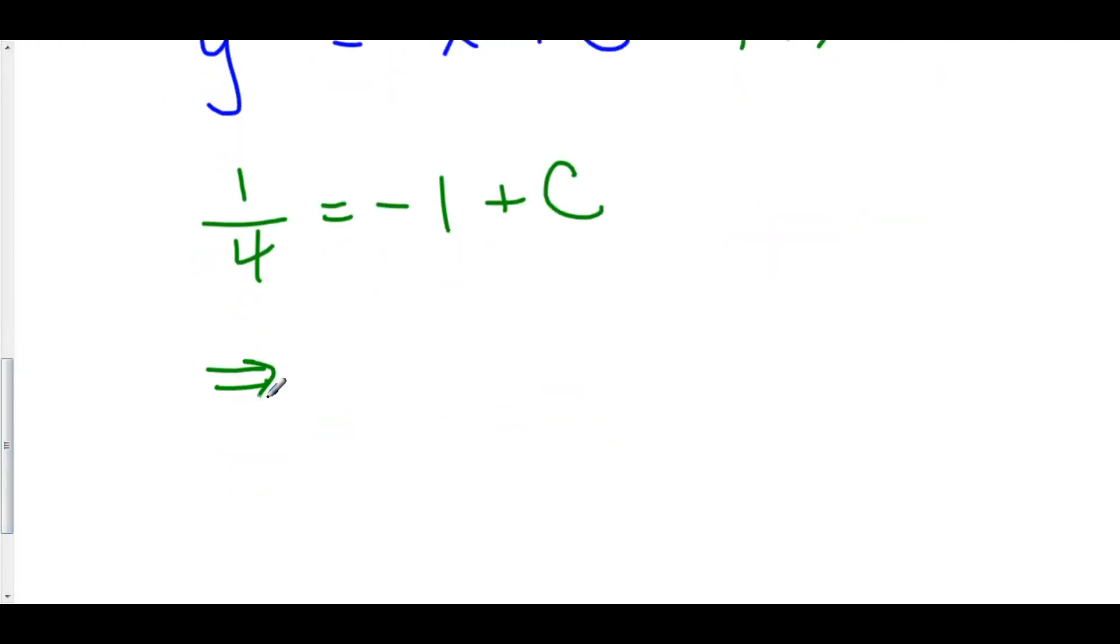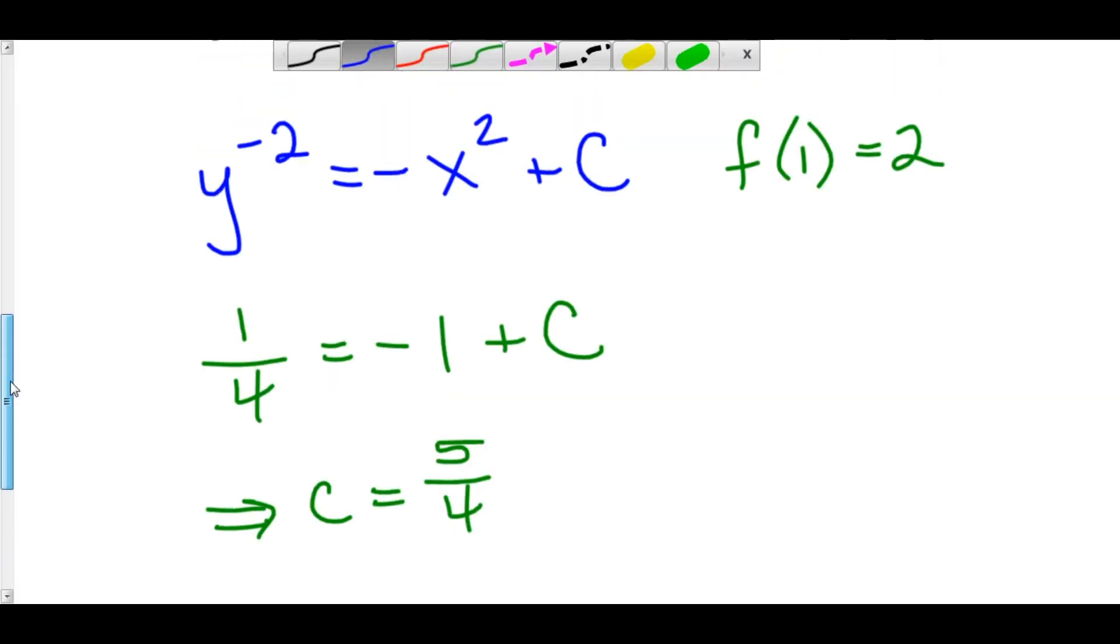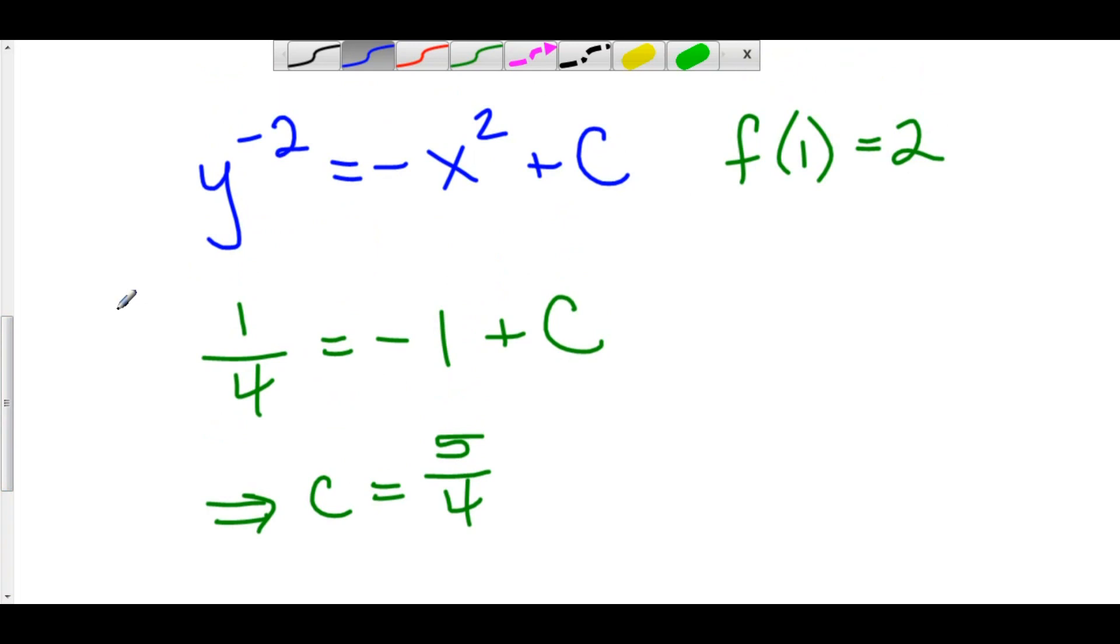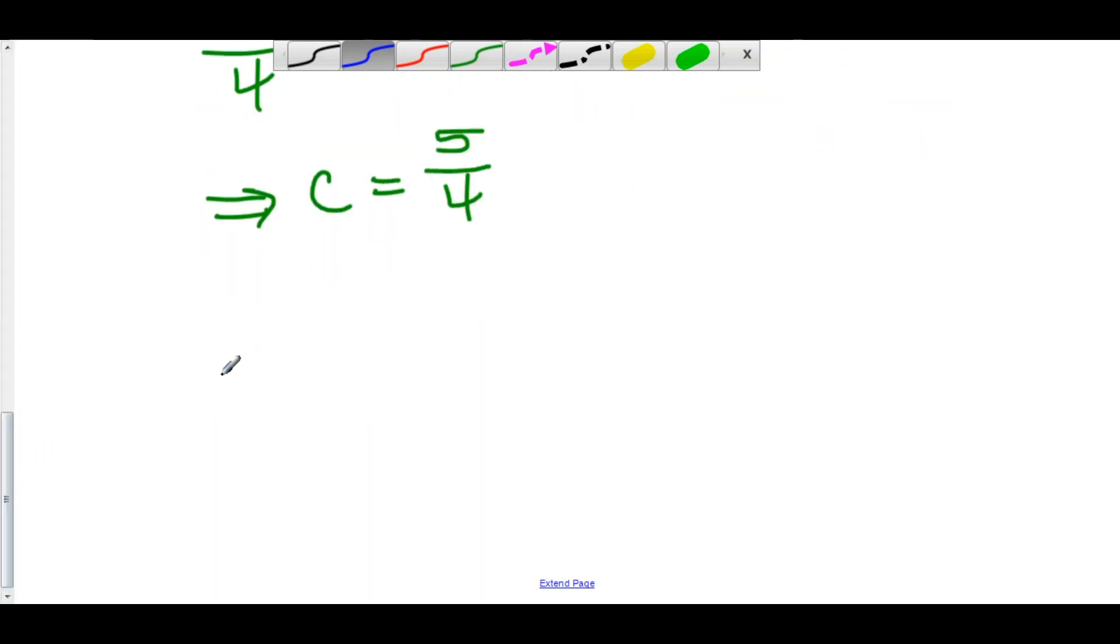We can add both sides by 1 and that yields c is equal to 5 over 4 because 1 over 4 plus 1 is 5 over 4. At this point we can now plug our c back into the equation that we're working on. So we have y to the negative 2 is equal to negative x squared plus 5 over 4.